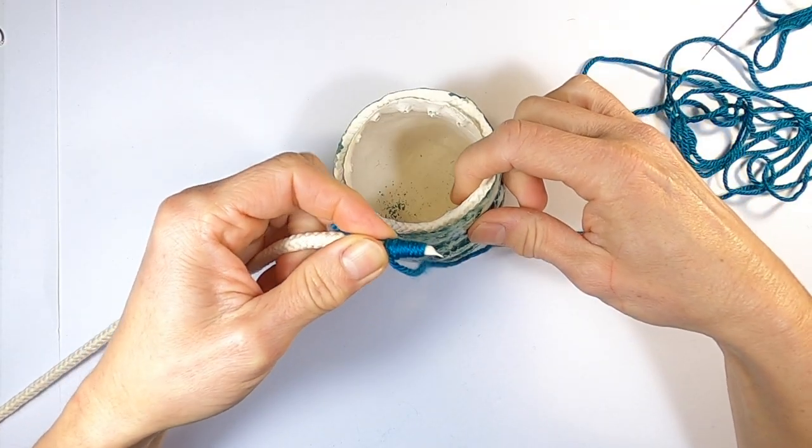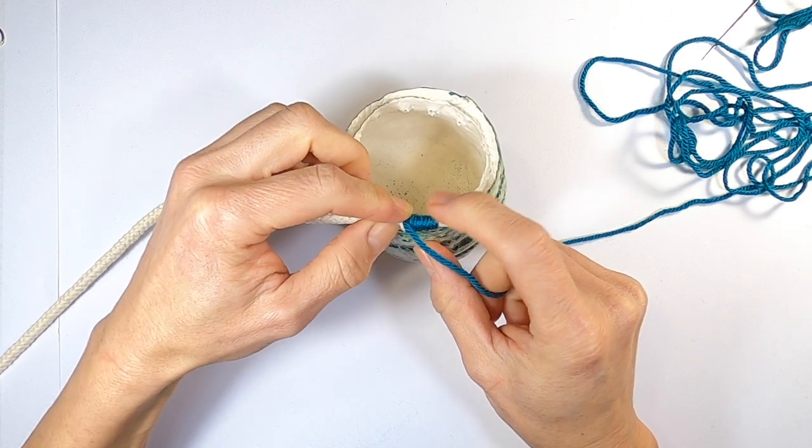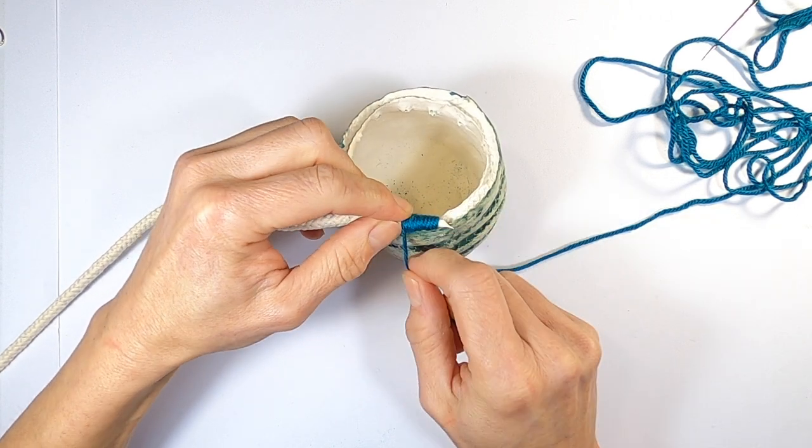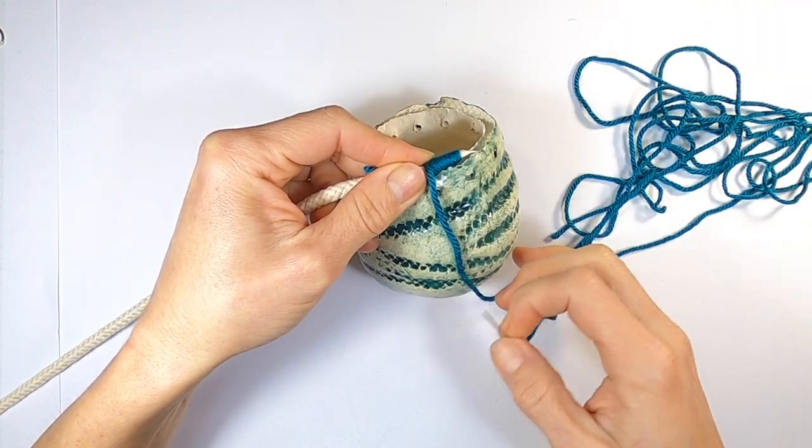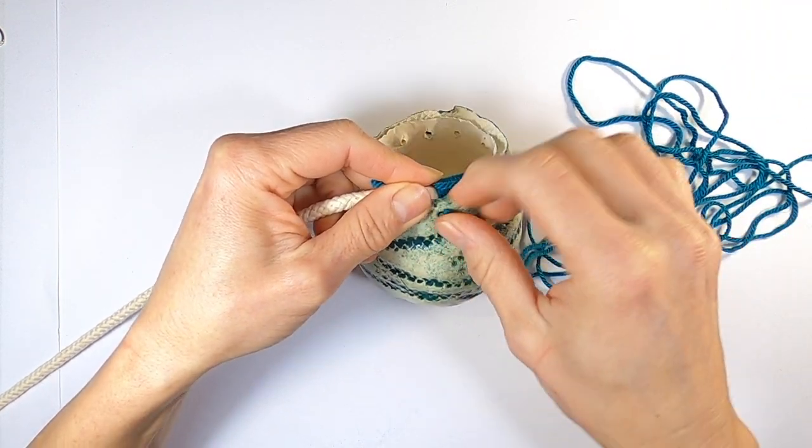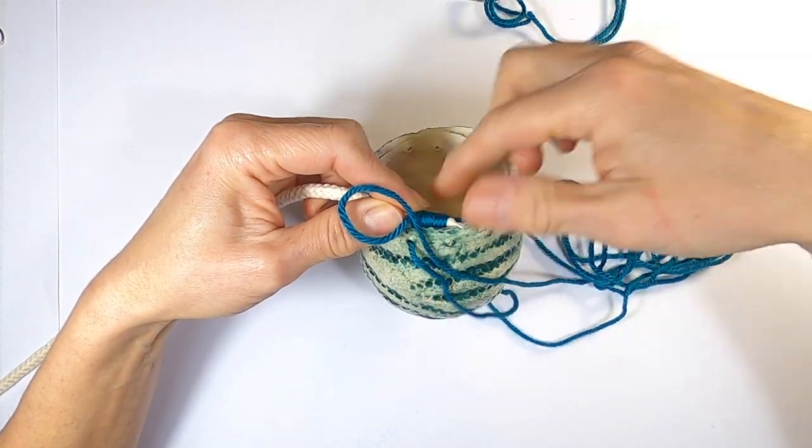Now you can attach it to the pot. This part is a little bit tricky. If you're having trouble, perhaps ask someone to hold it down for you. Thread the needle through the first hole. Pull the wool through and pull it tight so the cord is sitting snugly in the groove.